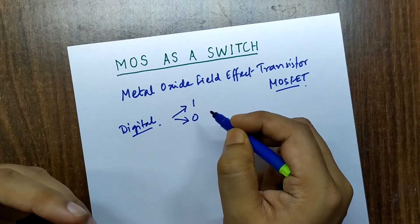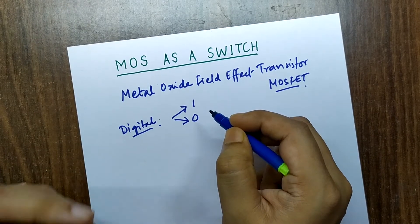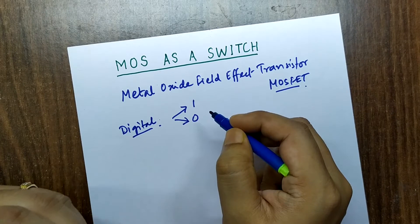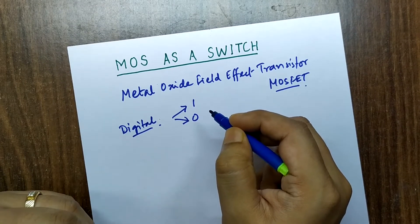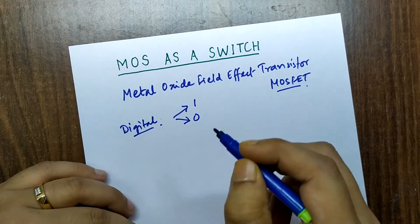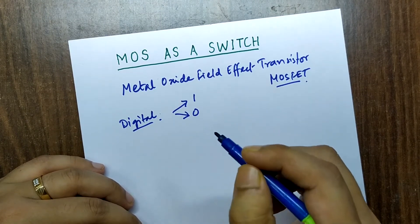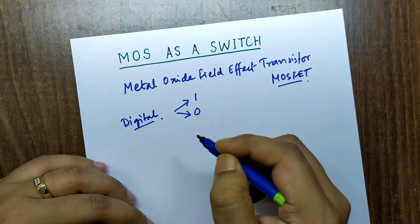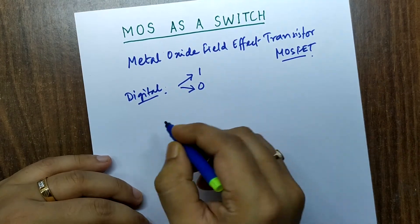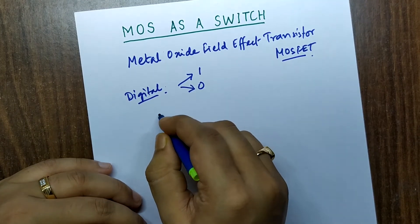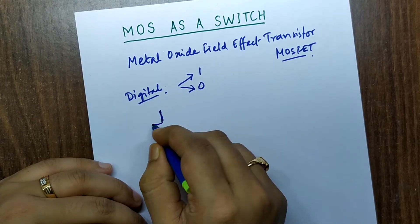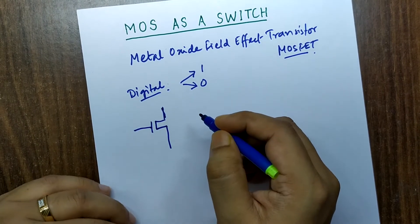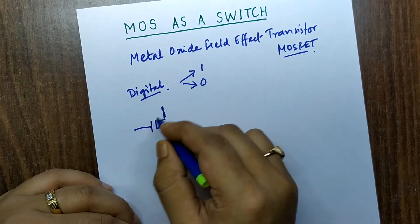Any digital switch that we use, we can make it using MOSFET. Let's see how we make a digital switch using MOSFET — it is very easy. This particular video is made only for understanding how MOS can be acted as a switch. First of all, we will discuss about the MOS symbol.